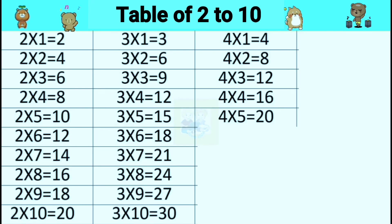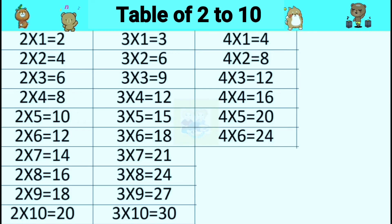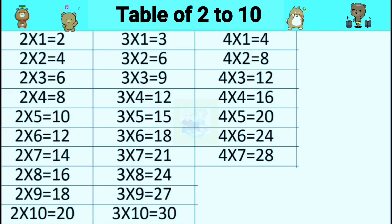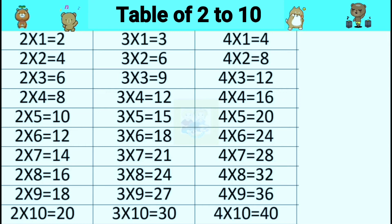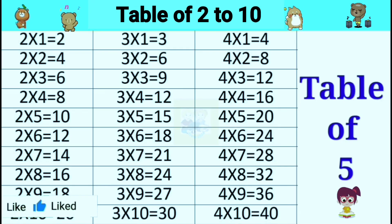Four sixes are twenty-four. Four sevens are twenty-eight. Four eights are thirty-two. Four nines are thirty-six. Four tens are forty.